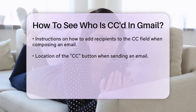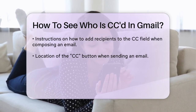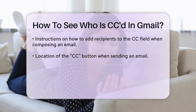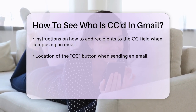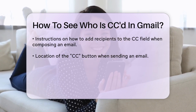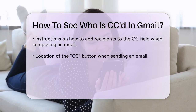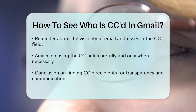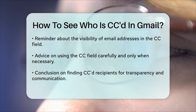To add someone to the CC field when you're sending an email, you need to click on the CC button, usually found below or next to the To field. This will open up a new field where you can enter the email addresses of the recipients you want to include. It's important to remember that using the CC field makes all the email addresses visible to everyone in the email, so it's a good idea to use it judiciously and only when necessary.